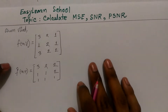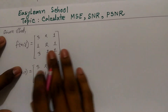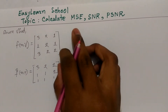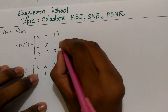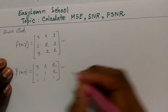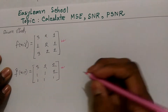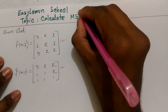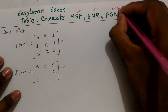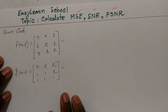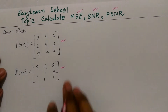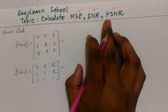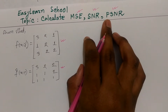Hello viewers! Today I am going to show you the first image of MSC. This is MSC, SNR and PSNR. MSC, SNR and PSNR are the formula.